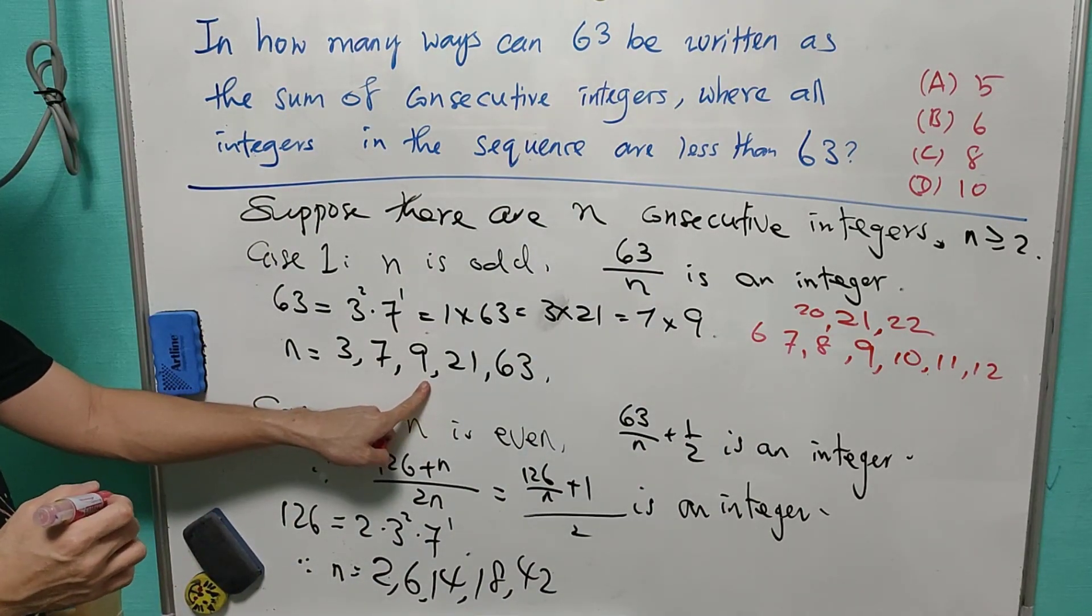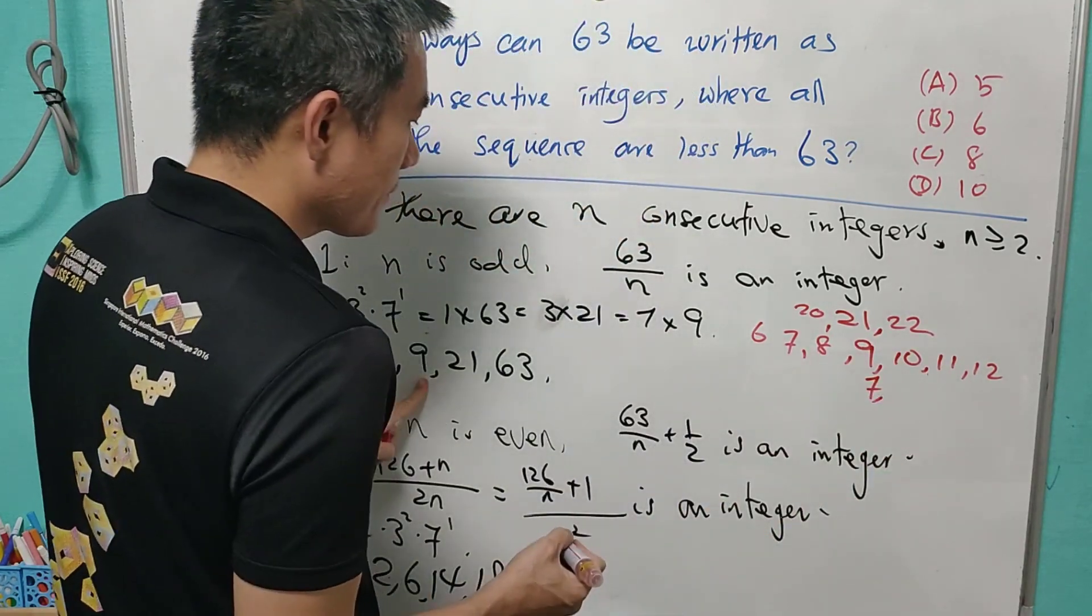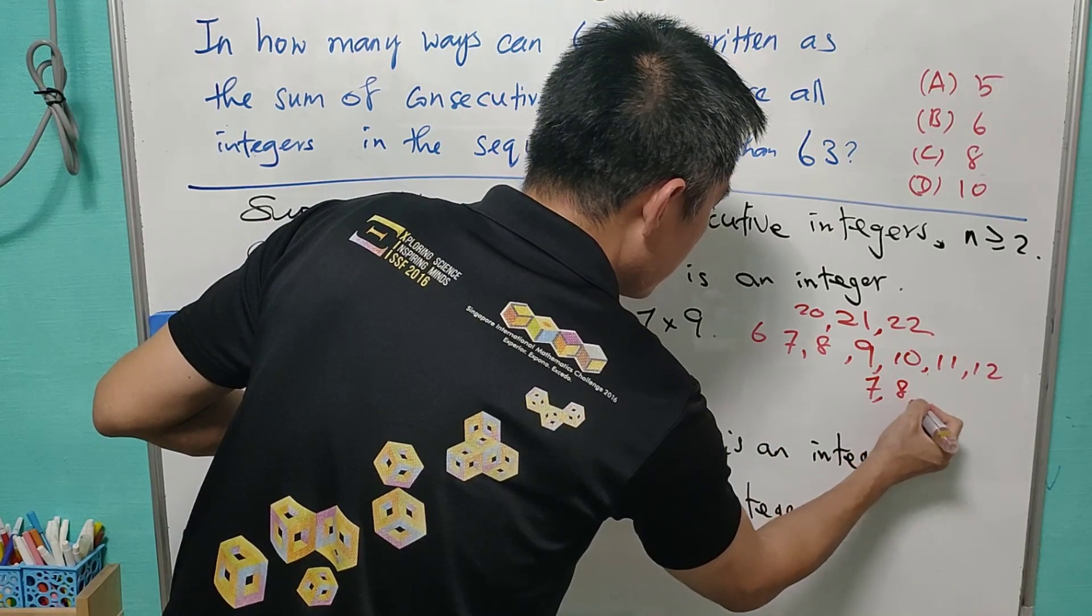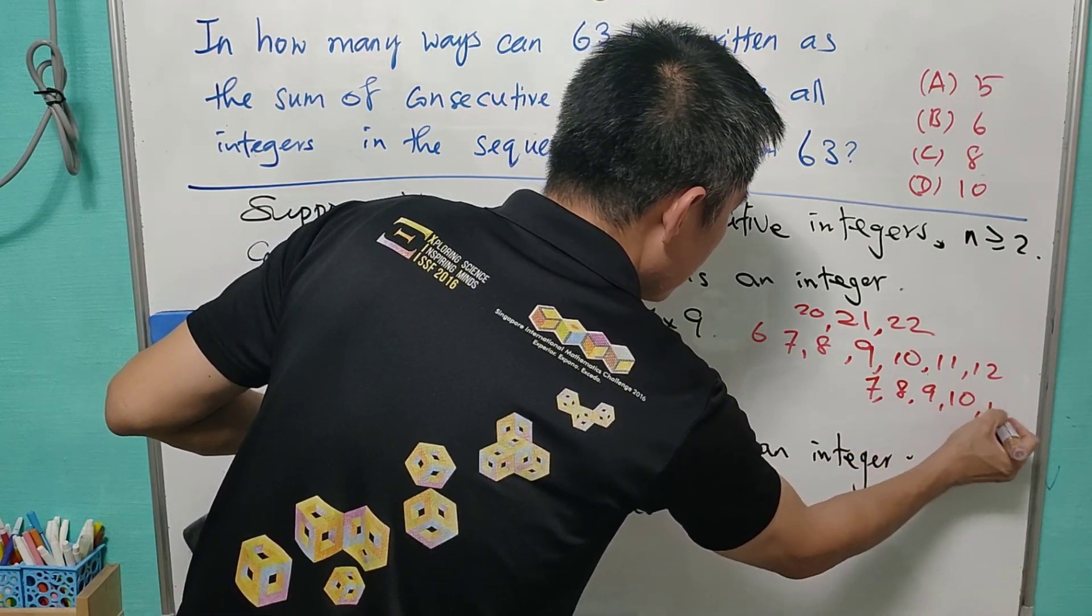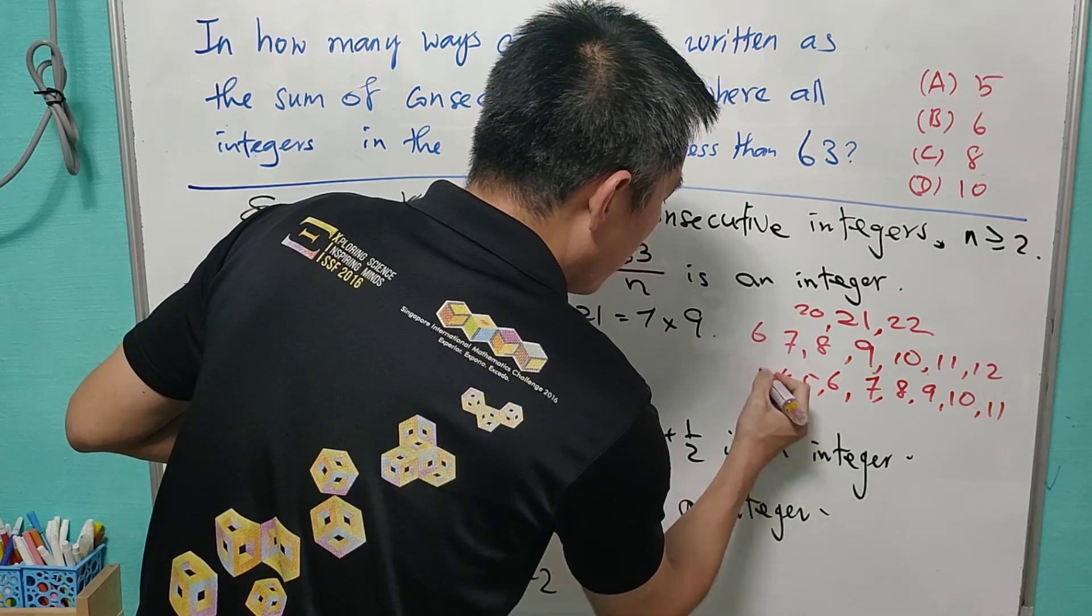For n equals to 9, this will be equal to 7. Then you will have 4 here: 8, 9, 10, 11. And this is 6, 5, 4, 3.